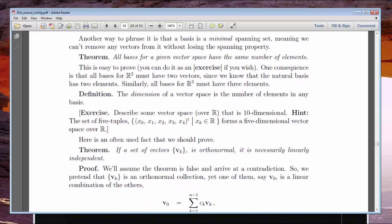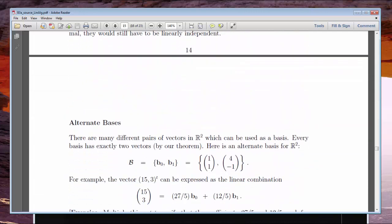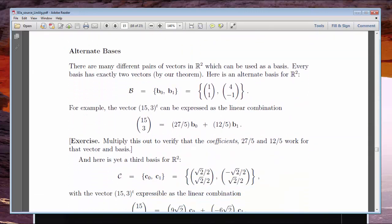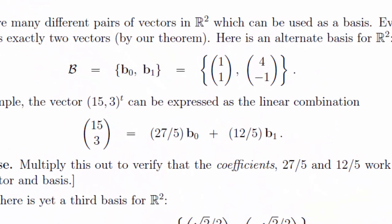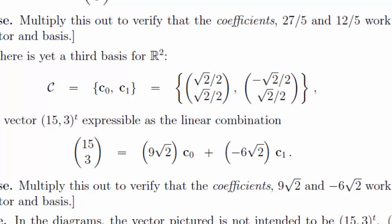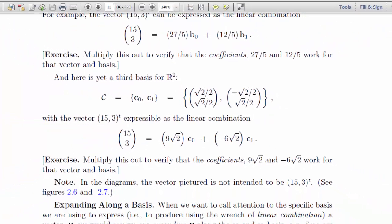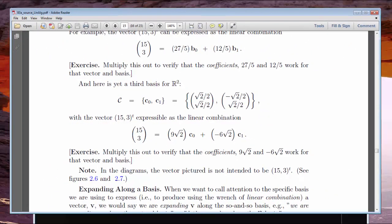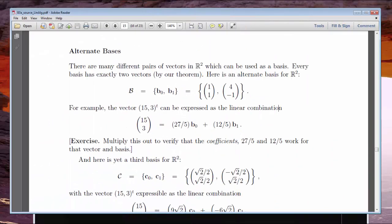We'll look at other R2 bases besides x-hat and y-hat. Here's one that I picked more or less at random and named script B. We could use script B instead of the natural basis to express any vector in R2. And here's a third one that I named script C. We'll also learn that the number of basis vectors determines the so-called dimension of the space. R2 is two-dimensional because every basis has two vectors.